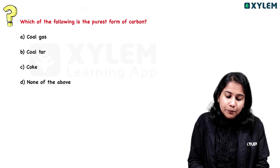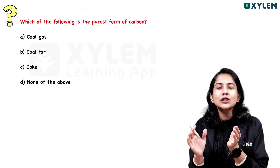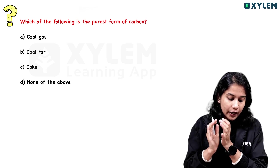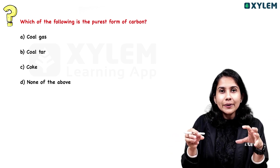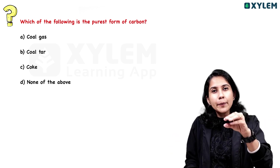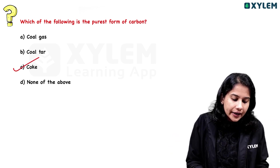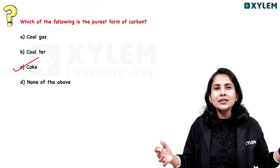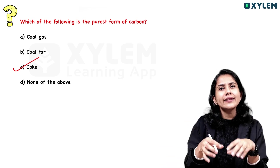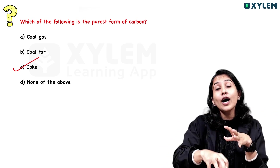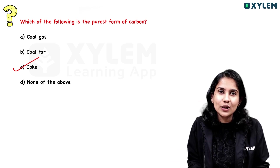Which of the following is the purest form of carbon? The options are: Coal gas, Coal, Tar, Coke, None of the above. The answer is Coke — it is the purest form of carbon. Coal gas, coal, and tar all have impurities already mixed in. Coke is the pure form.